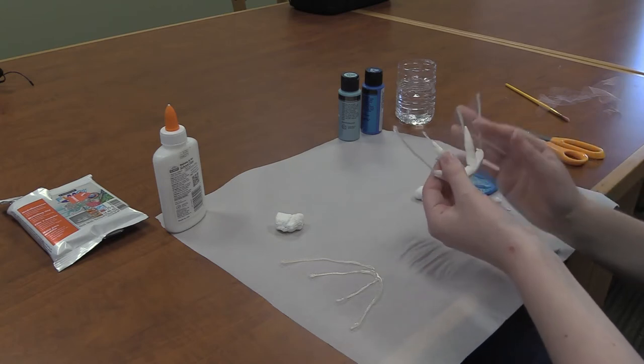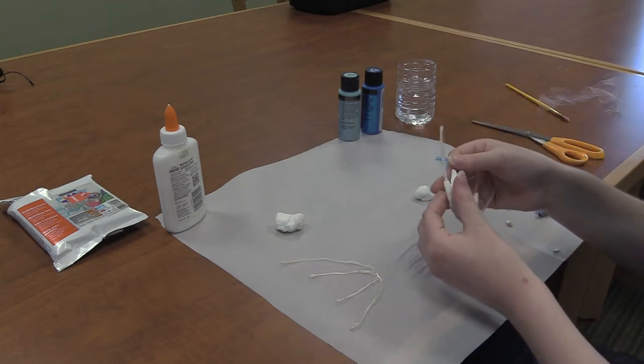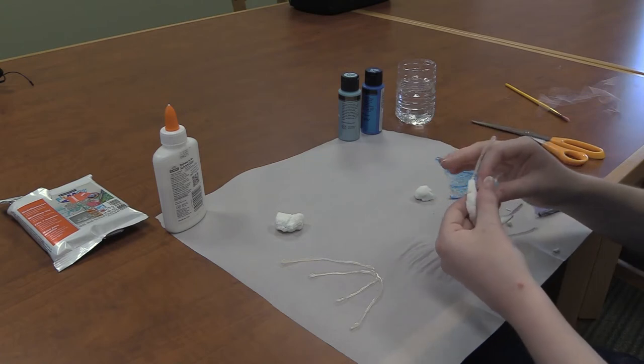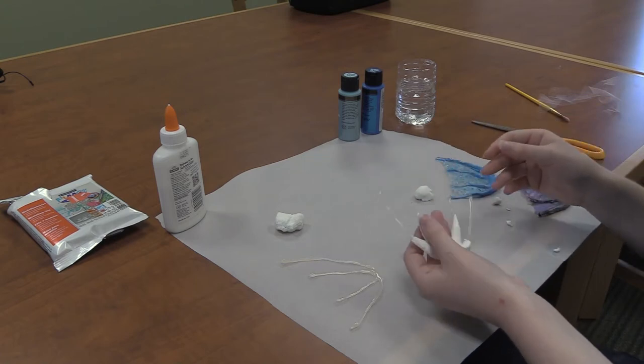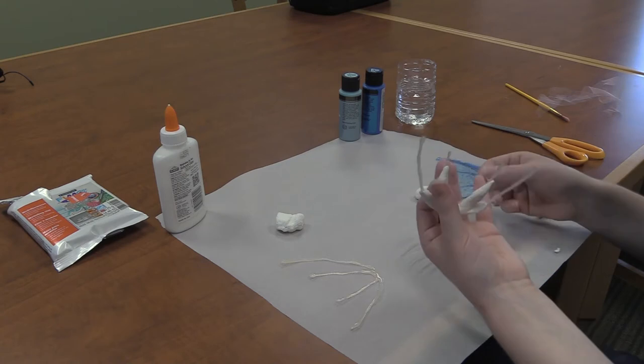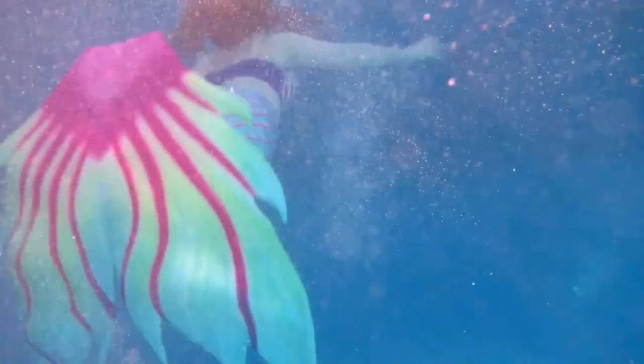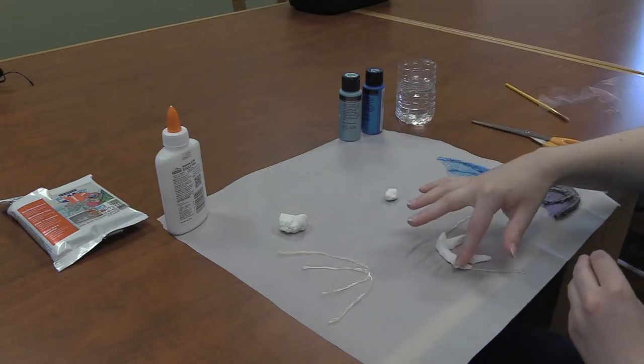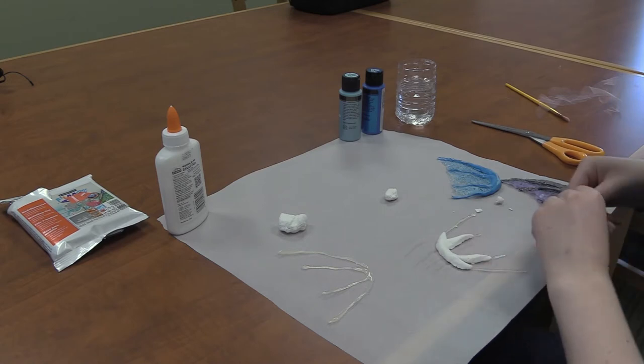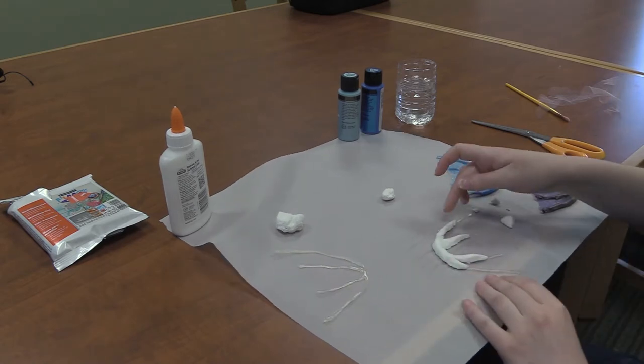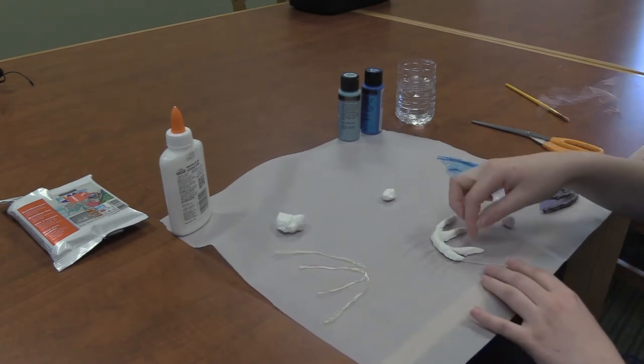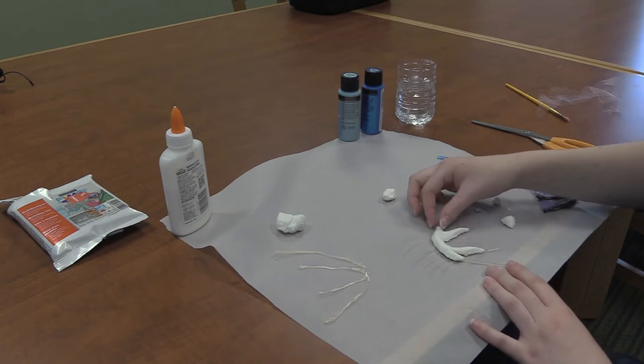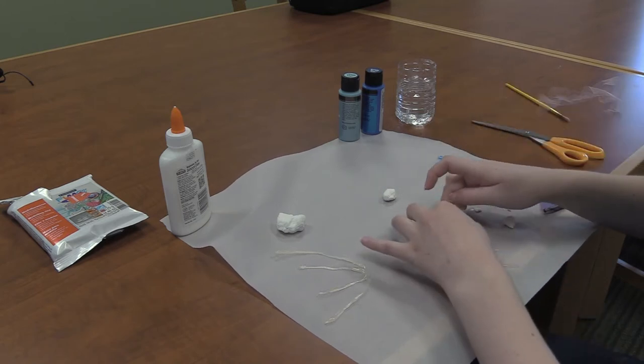Fortunately, the type of fabric we're using, the tulle, has a lot of holes because it's netting, so we're able to push the clay through the holes and create a strong seal. Now I'm going to use some of the extra clay to lengthen these top and bottom pieces. You want the top and bottom pieces to go a little bit past the middle pieces so that they look more aligned, more natural.